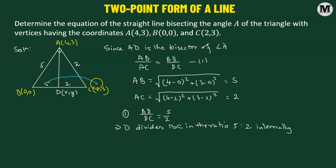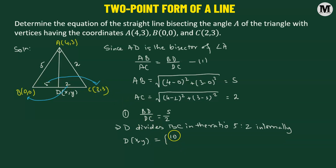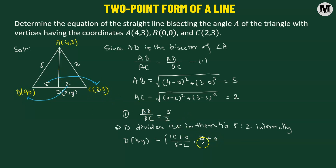The internal section formula states that we multiply 5 with the coordinate of C and 2 with the coordinate of B to get the coordinate of point D. To find the X coordinate: 5 times the X coordinate of C — that's 5 times 2, which is 10 — added to 2 times the X coordinate of B, which is 0, divided by 5 plus 2. For the Y coordinate: 5 times the Y coordinate of C — that's 5 times 3, which is 15 — added to 2 times the Y coordinate of B, which is 0, divided by 5 plus 2. This gives us 10 over 7 comma 15 over 7.